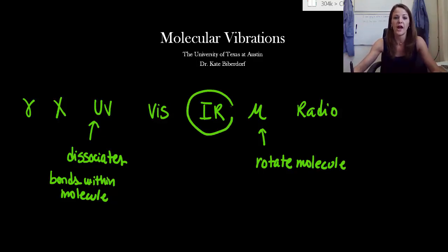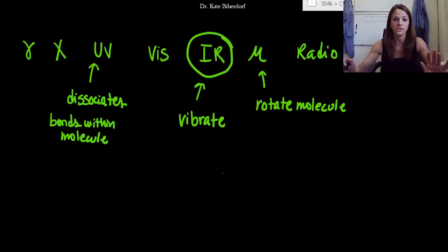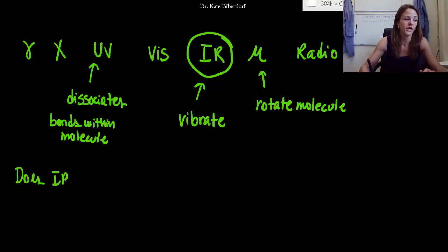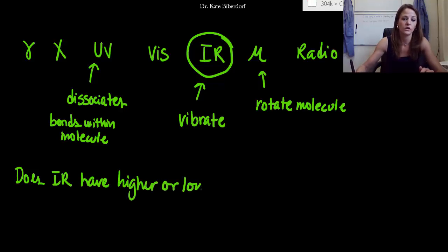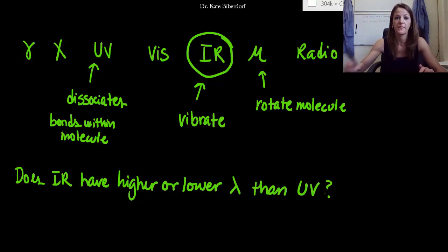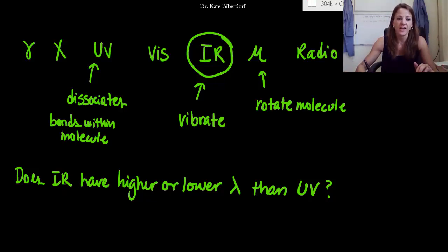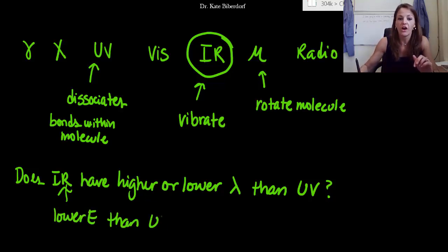What we're really going to talk about today is what happens when infrared radiation hits a molecule — it causes the molecule to vibrate. A quick question: does IR radiation have higher or lower wavelengths than UV? IR is lower energy than UV, so if IR is lower energy than UV, then it must have a higher wavelength.